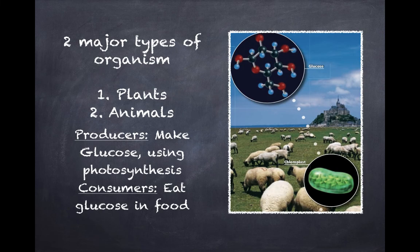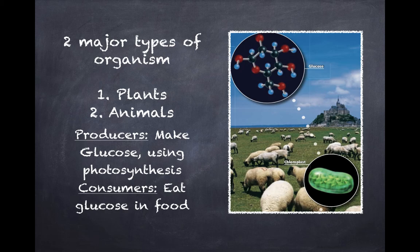There are two major types of organisms, as you are well aware. If I asked you in class, you would probably say plants and animals — and that would be correct. But we should start thinking about plants as being producers, because plants are able to make glucose using photosynthesis, whereas animals or consumers have to eat glucose in their food in order to survive.